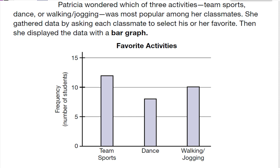So here we have a problem. Patricia wondered which of three activities — sports, dance, or walking — was most popular with her classmates. She gathered data by asking each classmate to select his or her favorite, and then she showed this data with a bar graph. This is an example of our graph. We've seen these before.